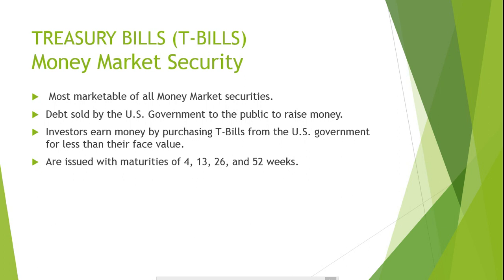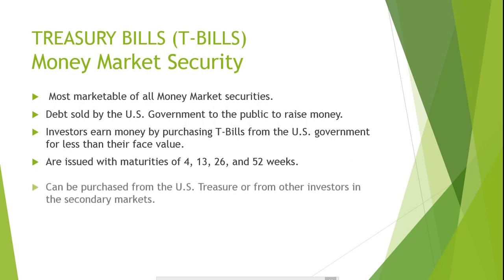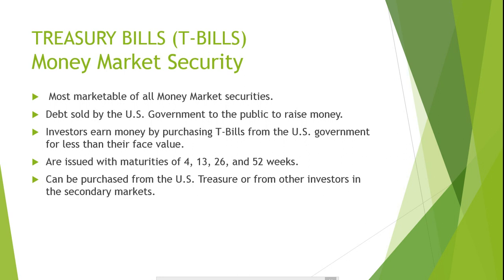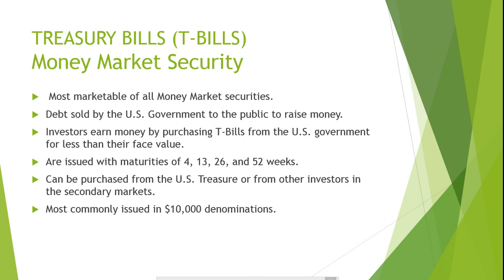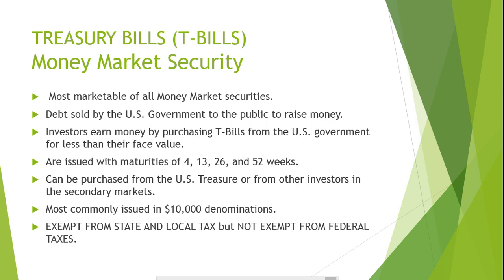Treasury bills are issued with initial maturities of 4, 13, 26, and 52 weeks. T-bills can be purchased from the U.S. Treasury or in the secondary markets from a dealer of government securities. Treasury bills are highly liquid because they can easily be converted to cash, and the transaction costs are low. T-bills sell for denominations as low as $100, although they are most commonly sold in $10,000 denominations.